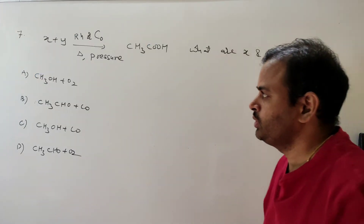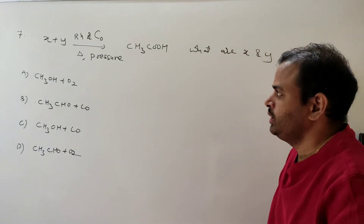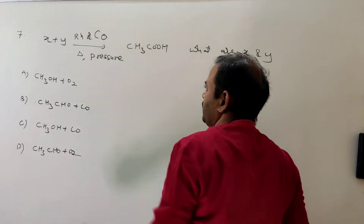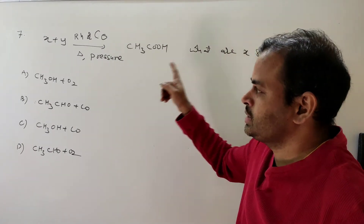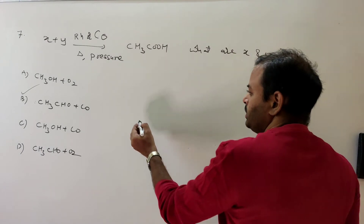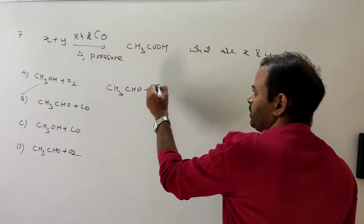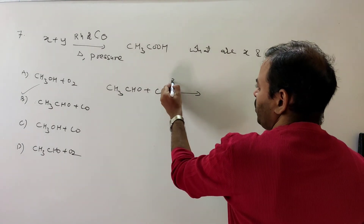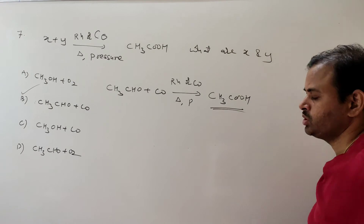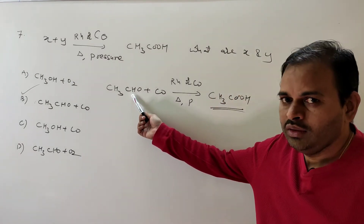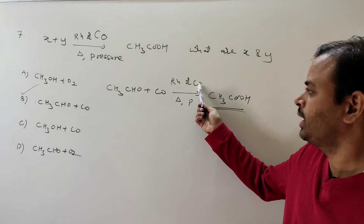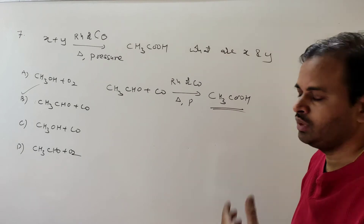Seventh question: preparation of acetic acid in presence of rhodium or cobalt catalyst with heating and pressure — what are X and Y? The answer is CH3CHO plus CO. This is a special method for preparation of acetic acid. CH3CHO (acetaldehyde) and CO (carbon monoxide) react in presence of cobalt or rhodium catalyst to give CH3COOH.